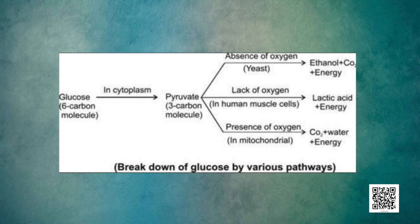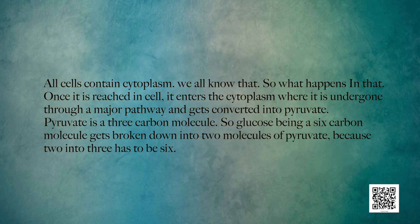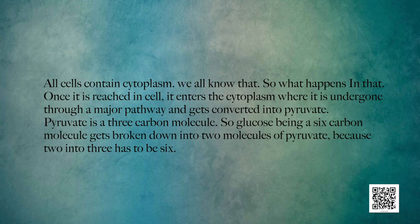Let us look at the steps of respiration. Glucose is a 6-carbon molecule absorbed in our villi by blood capillaries, and the bloodstream carries it to all cells of the body. Once inside the cell, it enters the cytoplasm where it undergoes a major pathway and gets converted into pyruvate — a 3-carbon molecule. So one glucose molecule gets broken down into 2 molecules of pyruvate, releasing some energy, and this happens in every cell.